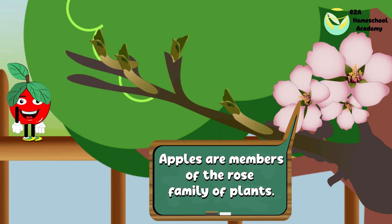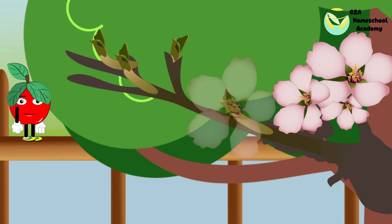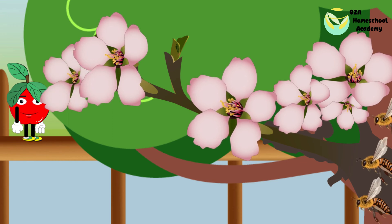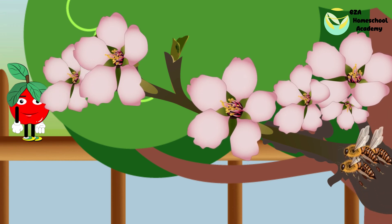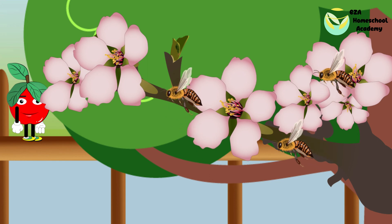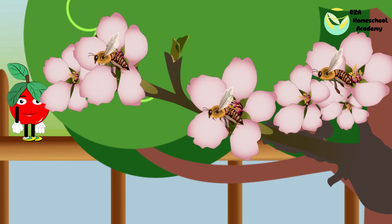Buds on the tree means it's ready to make fruit. Blossoms will form in the place of the buds. Pollinators like bees will come to help the tree make new fruit.